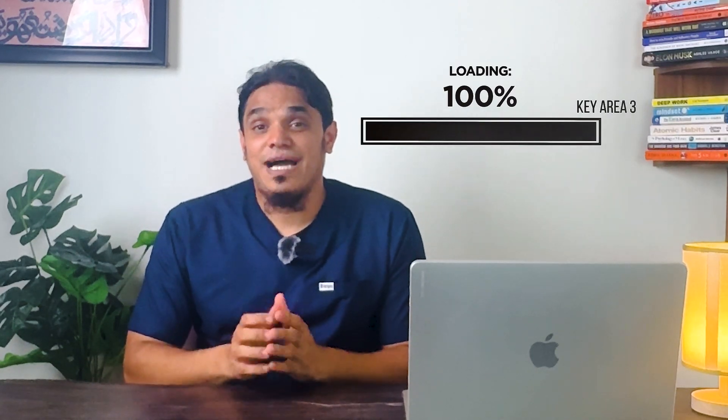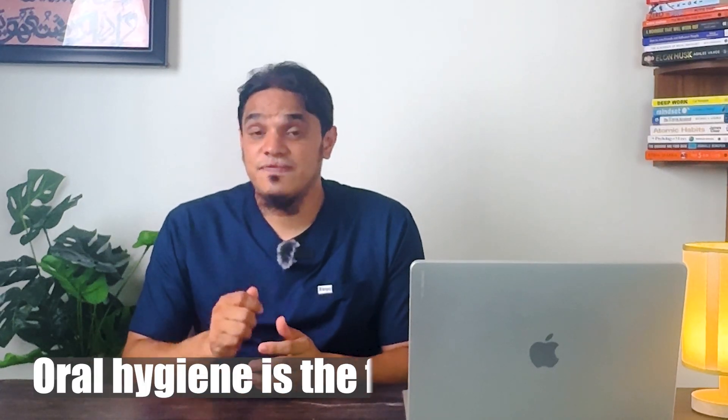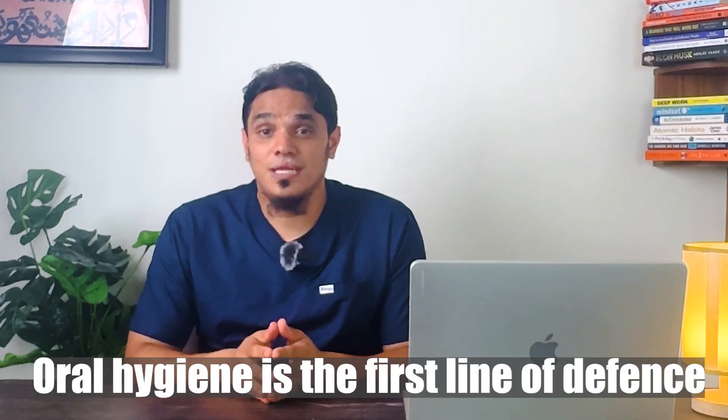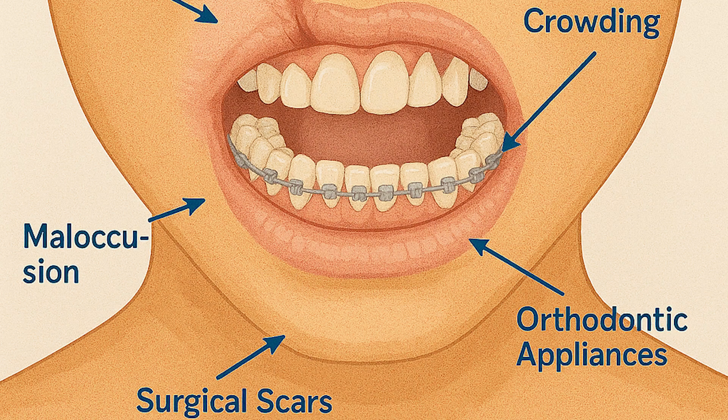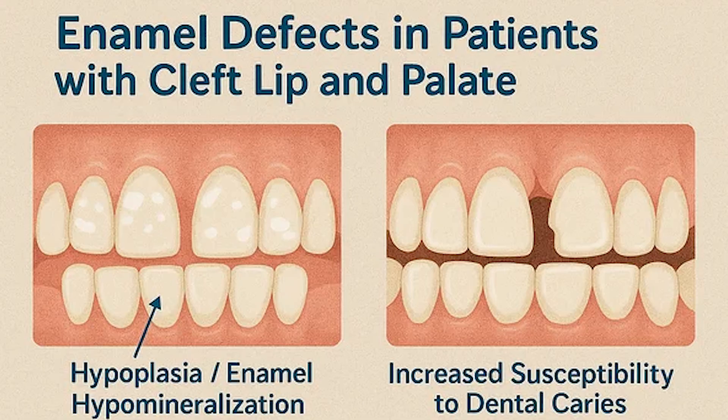Key area three is the heightened importance of oral hygiene. This might sound basic, but it's absolutely critical. Oral hygiene is your child's first line of defense against cavities and oral health problems. Why is it a bigger challenge? It's because of the anatomy—surgical scars, crowded teeth, malpositioned teeth, and orthodontic appliances create nooks and crannies that are hard to clean.